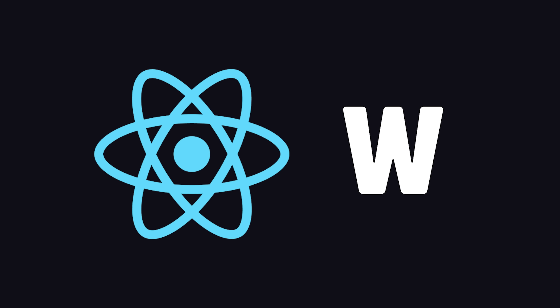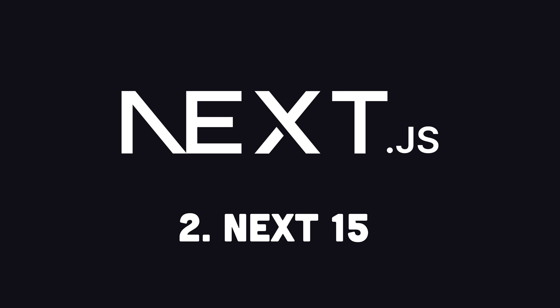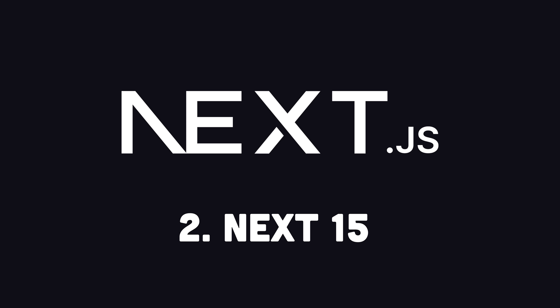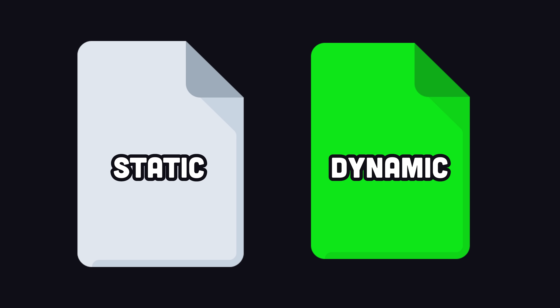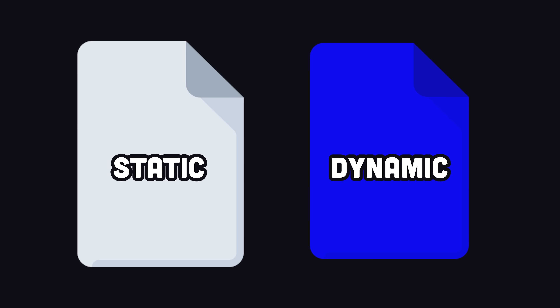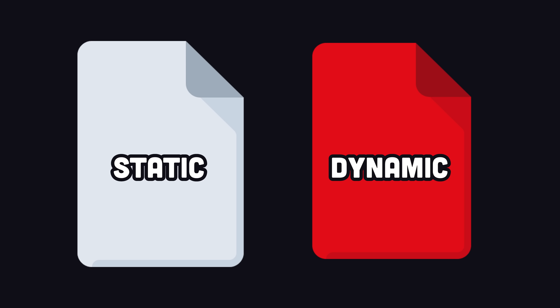That's a huge win for React, and brings us to the updates in Next.js 15. Next.js 15 already has support for the React 19 compiler, but I think the most interesting new feature is something called partial pre-rendering. Normally, when you render a web page in Next, it's either static, when the data doesn't change very often, or it's dynamic, when the data is uncached and is constantly changing.